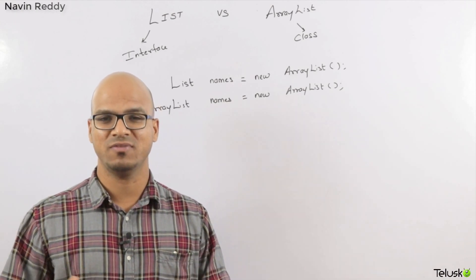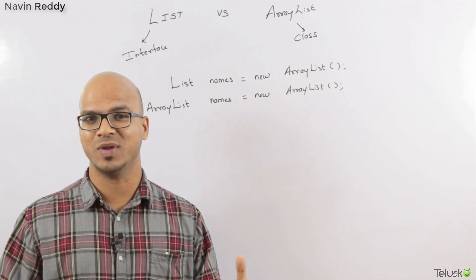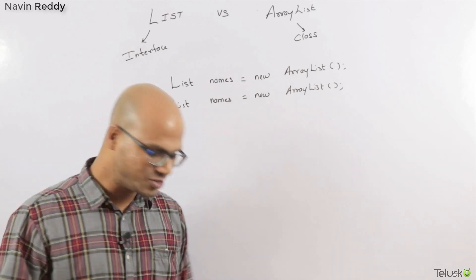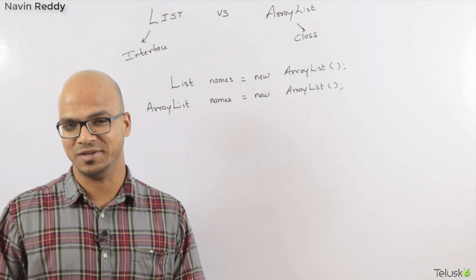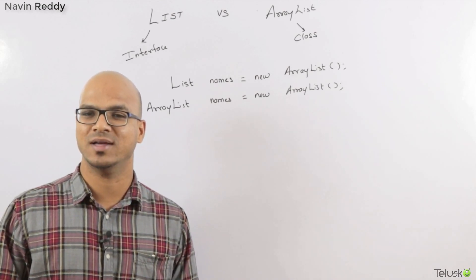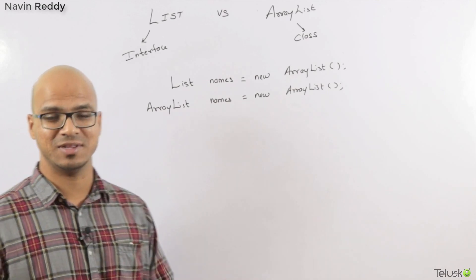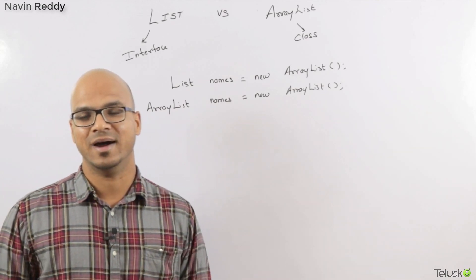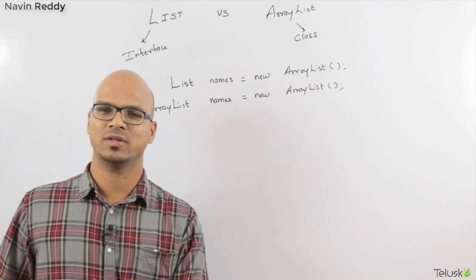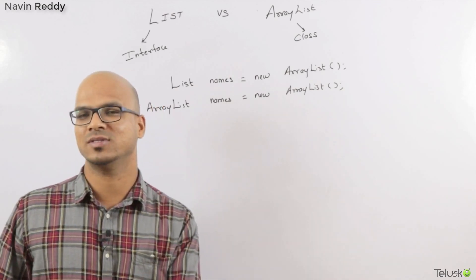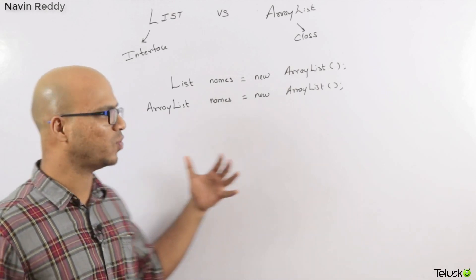Welcome back. I'm Nervyn Reddy from Tales for Learnings and today we are going to talk about a frequently asked question: why we create a reference of a list or the interface and the object of a class. The classic example is the collection List interface and a List class. We don't use it much compared to other topics like inheritance, but the moment you come to collections, this is a frequently asked thing.